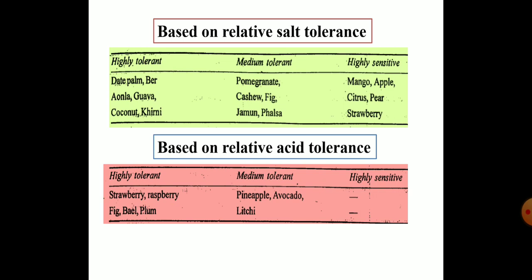Now based on relative acid tolerance, highly tolerant fruits include strawberry, raspberry, fig, bael, and plum. For medium tolerant fruits, the examples are pineapple, avocado, and lychee. Pause the video and note down these examples and memorize them.